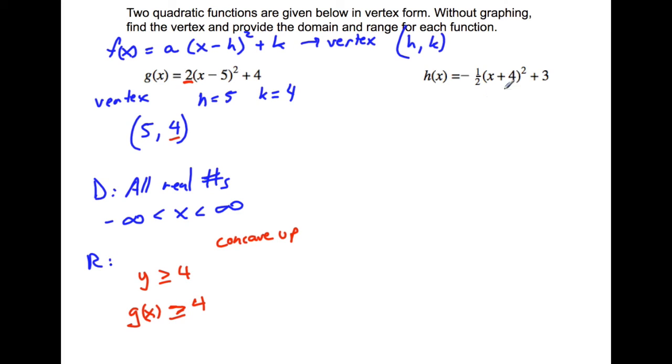Let's try another one. Same thing here. We take the opposite sign of the h, so h equals negative four, and we keep the sign for k, which is positive three. So k equals three. So our vertex for h(x) is going to be negative four, three.